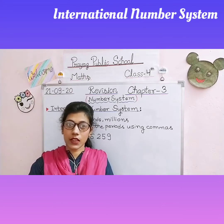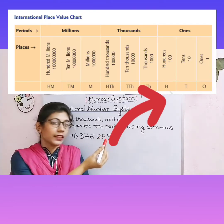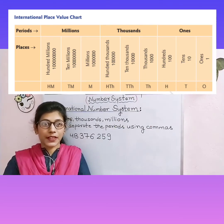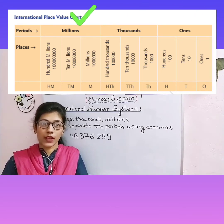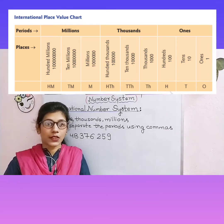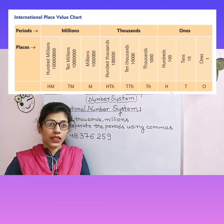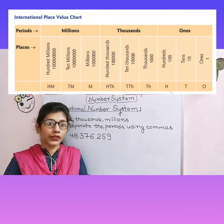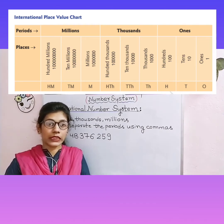So let's get started. This is our International Place Value Chart. It has three main columns: Ones, Thousands, and Millions. Ones is divided into three columns: ones, tens, and hundreds. Thousands is also divided into three: thousand, ten thousand, hundred thousand. Millions is also divided into three: million, ten million, hundred million.